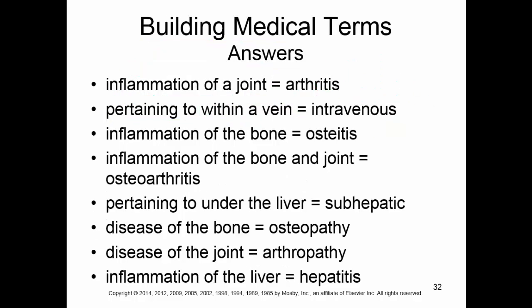Here are the answers: arthritis, intravenous. Inflammation of a bone is osteitis. Inflammation of the bone and joint is osteoarthritis. Pertaining to under the liver is subhepatic. Disease of the bone is osteopathy. Disease of the joint is arthropathy. And inflammation of the liver is hepatitis.